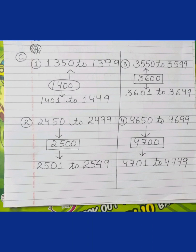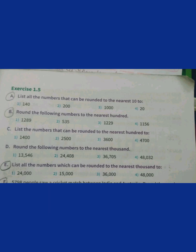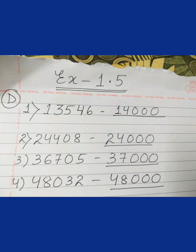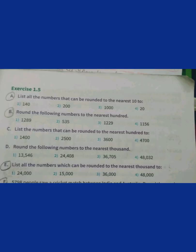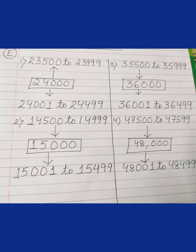Coming to question number D: round the following numbers to the nearest 1000s. Question number 1 is 13,546. It has to be rounded up to the nearest 1000, so the difference should be 1000. The range is 13,000 and 14,000. So, 13,546 is rounded to 14,000. Question number E: list all numbers which can be rounded to the nearest 1000s. Question number 1 is 24,000. The lower limit is 23,500 to 23,999 and the upper limit is 24,001 to 24,499. Similarly, we can do question numbers 2, 3, and 4.